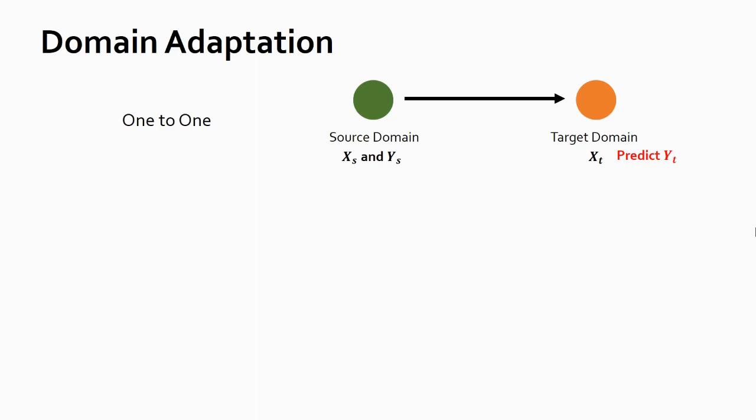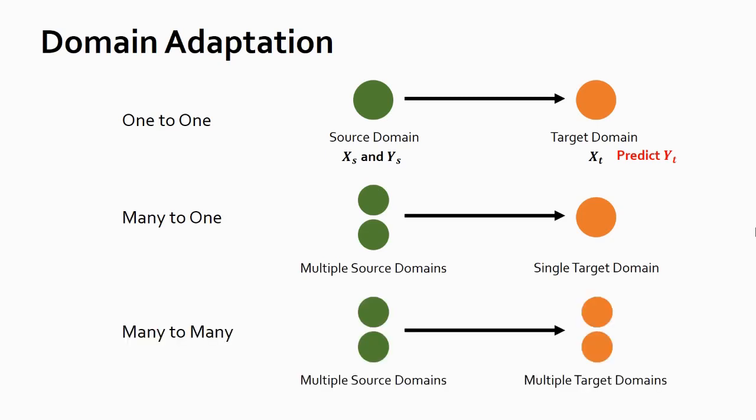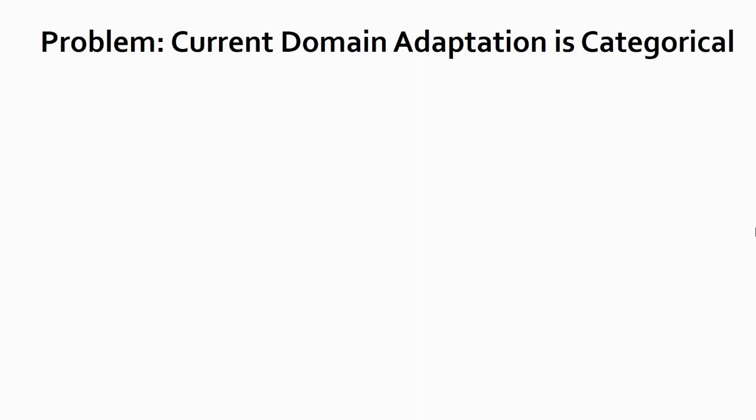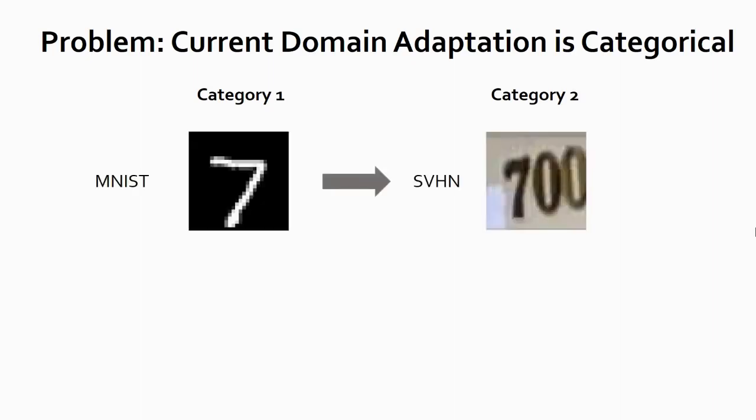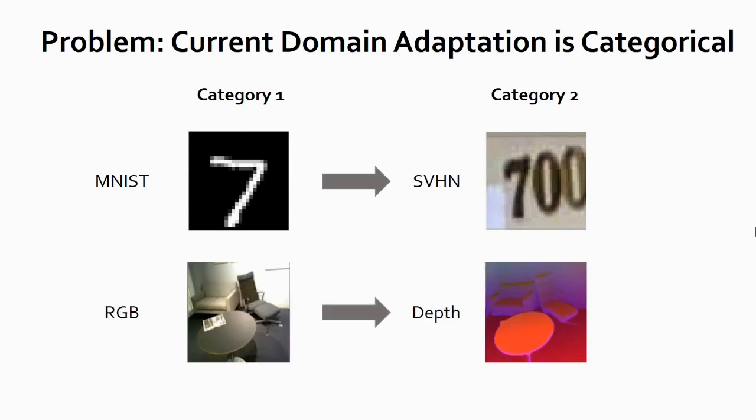Naturally, this setting can be extended to multi-source single target or even multi-source multi-target. However, current domain adaptation has a problem. It's categorical. It usually formulates adaptation problems as transferring the data from one category to another. For example, one may consider adapting a classification model from the MNIST dataset to the SVHN dataset. People also consider other tasks such as adapting a model from RGB images to depth images.